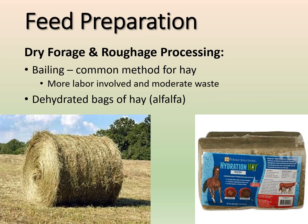For dry forage and roughage processing: a very common method, especially for hay, is baling. It's more labor intensive and results in a moderate amount of waste — animals can pick out stems and only eat leaves. You can have different sizes of bales, such as large round bales or smaller rectangular bales. A growing option is dehydrated bags of hay, where moisture is removed to make a tiny compact block, which is easier to package with less waste. You reconstitute it in a bucket of water and it rehydrates.